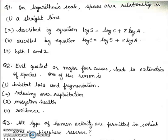First, on logarithmic scale, space area relationship is: First, a straight line. Second, described by equation log S equals log C plus Z log A. Third, described by equation log C is equal to log S plus Z log A. Fourth, both 1 and 2. Right answer will be fourth, both 1 and 2.